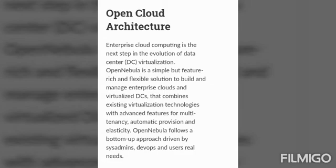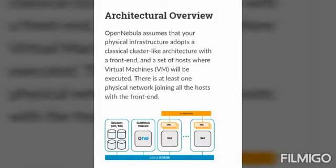Next point is virtualization host. To run the virtual machine we require some physical machines, which are called host machines. The virtualization subsystem is responsible for communicating with the hypervisor and taking the required action for any change in the virtual machine lifecycle. During installation, the admin account should be enabled to execute commands with root privileges. Third point is storage — data stores are used to handle virtual machine images, and each data store must be accessible by the front end using any type of storage technology.